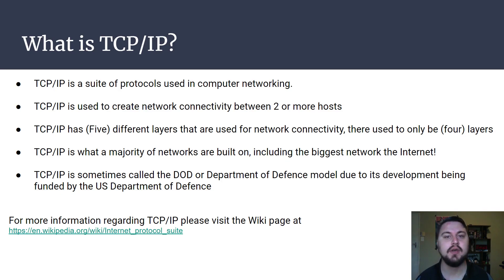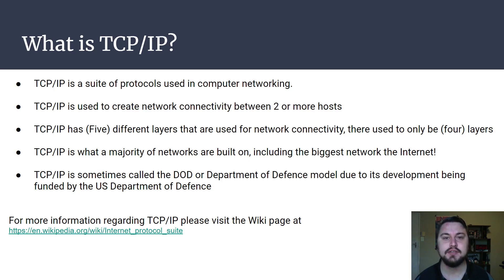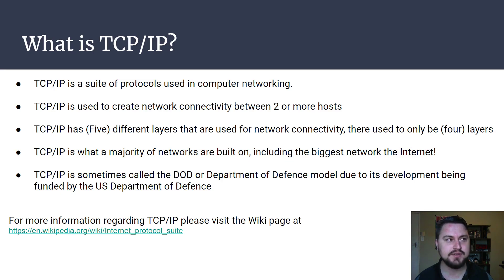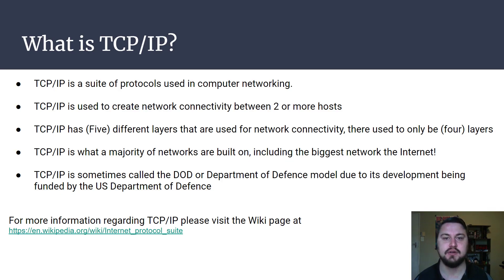The moment you have two computers and they're talking to each other, you can consider that as a network. Even though it might be a very small network, that is a network. TCP/IP does have five different layers at which it operates. It used to only have four layers, but the people that developed TCP/IP saw the benefit of splitting layer one and two out from each other, which brought it back up to five layers. So it's very useful for troubleshooting, looking at the different layers.